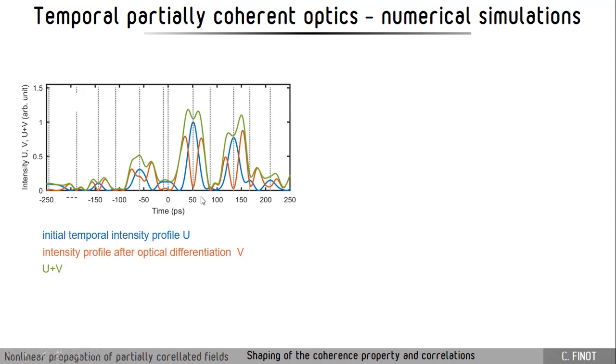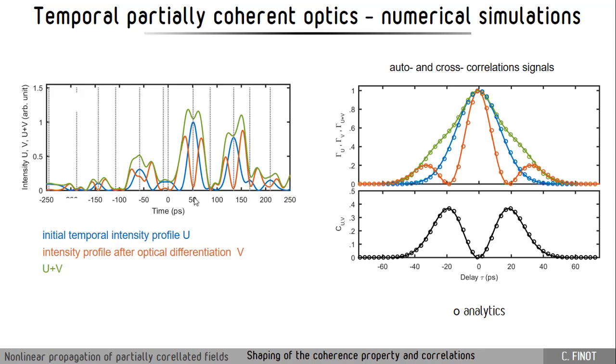What we see is that the two patterns are complementary. When you have a maximum of the initial temporal intensity profile, then you get a minimum value close to zero for the other field. We can also see that when you add both intensity profiles you have a structure that is larger in the temporal domain - you have increased your coherence with adding the two fields.